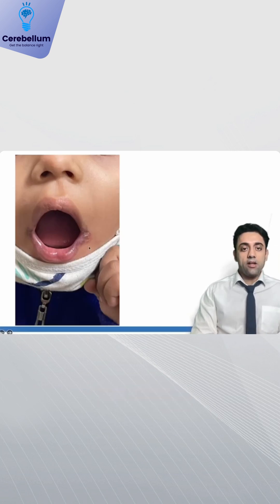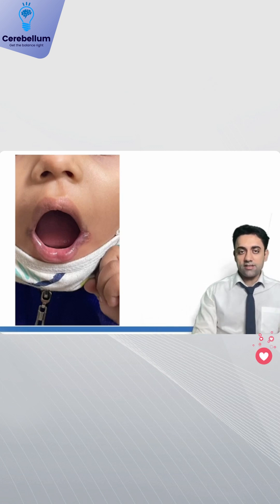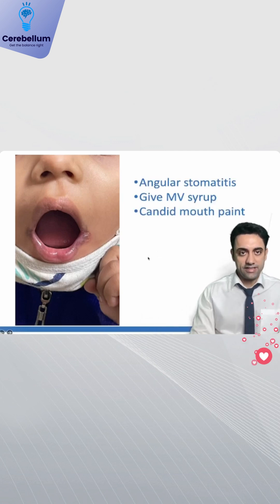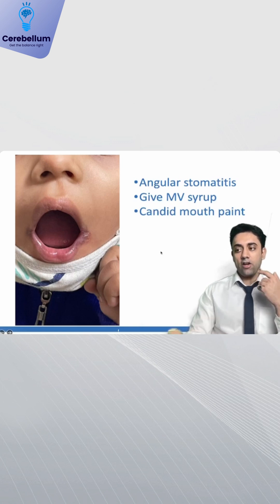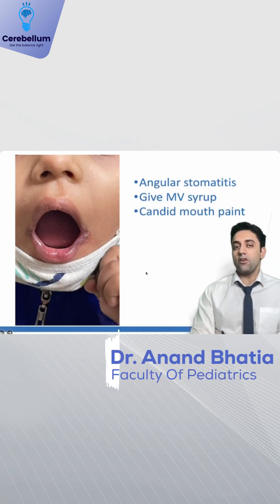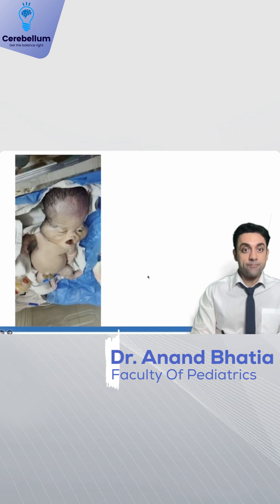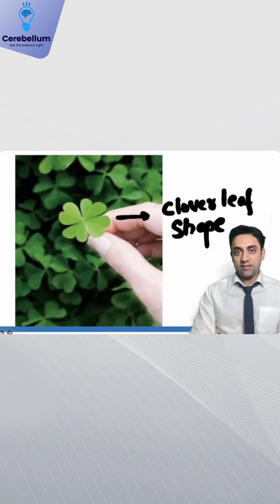Please remember the angle of the mouth — the angle of the mouth of the baby has some lesions. What is this? This is nothing but chelitis or angular stomatitis, basically inflammation at the angle of the mouth because of multivitamin or iron deficiency.